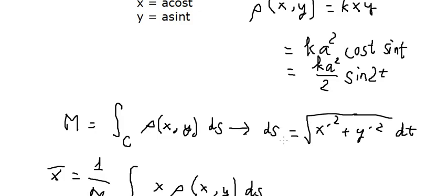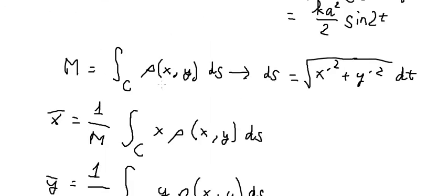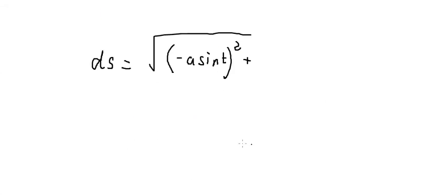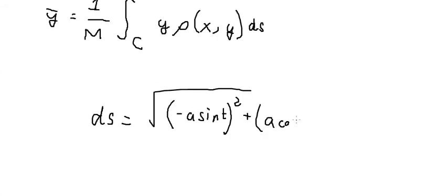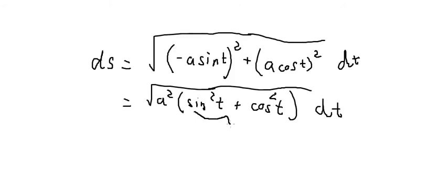So we need to find ds first. First derivative of x, you got about negative a sin t to the power of 2. First derivative of y, you got about a cos t, everything to the power of 2 dt. So if we simplify this one, you got about a square, sin t square plus cos t square. We know that this is about number 1, so we have a dt.